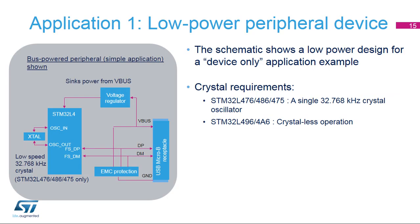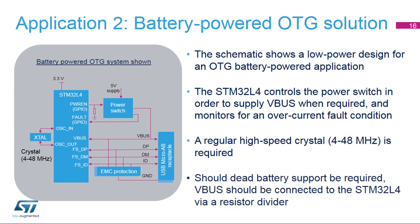Here is an application example of a low-power device. Power is drawn directly from the USB VBUS signal, and a single low-speed crystal oscillator at 32.768 kHz is needed externally. A scheme is implemented inside the microcontroller using this low-speed crystal oscillator to trim the internal 48 MHz oscillator, giving the required frequency accuracy to comply with the USB specification.